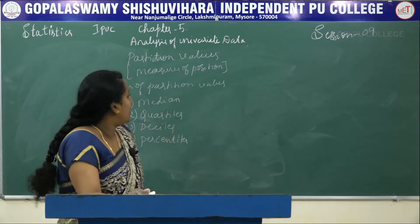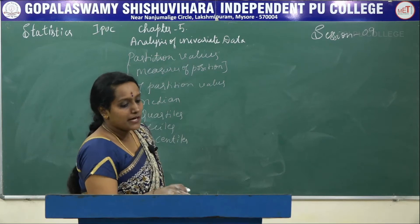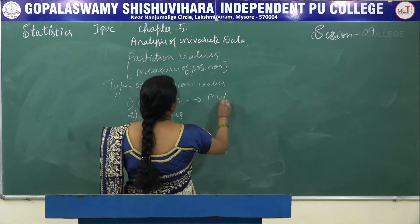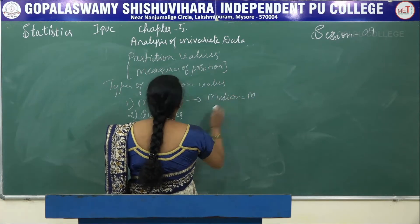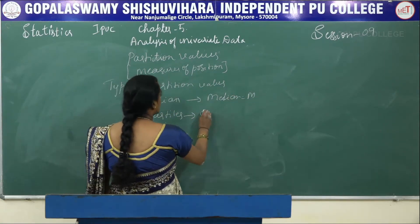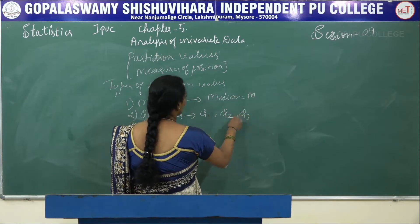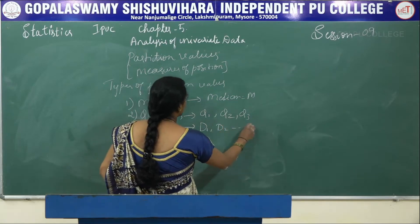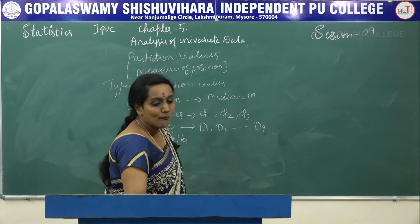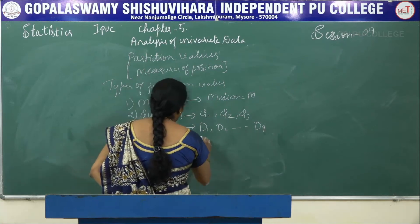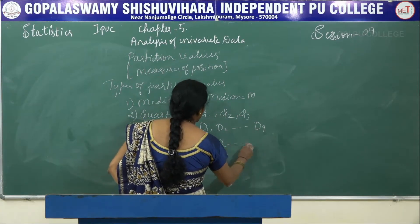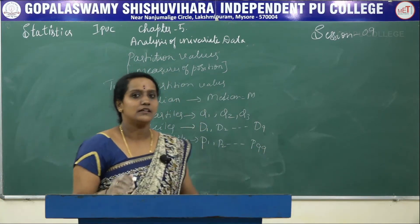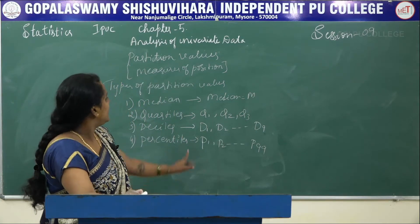Median is denoted as M. In quartiles, we have Q1, Q2, and Q3. For deciles it is D1, D2, up to D9. And for percentiles it is P1, P2, up to P99.